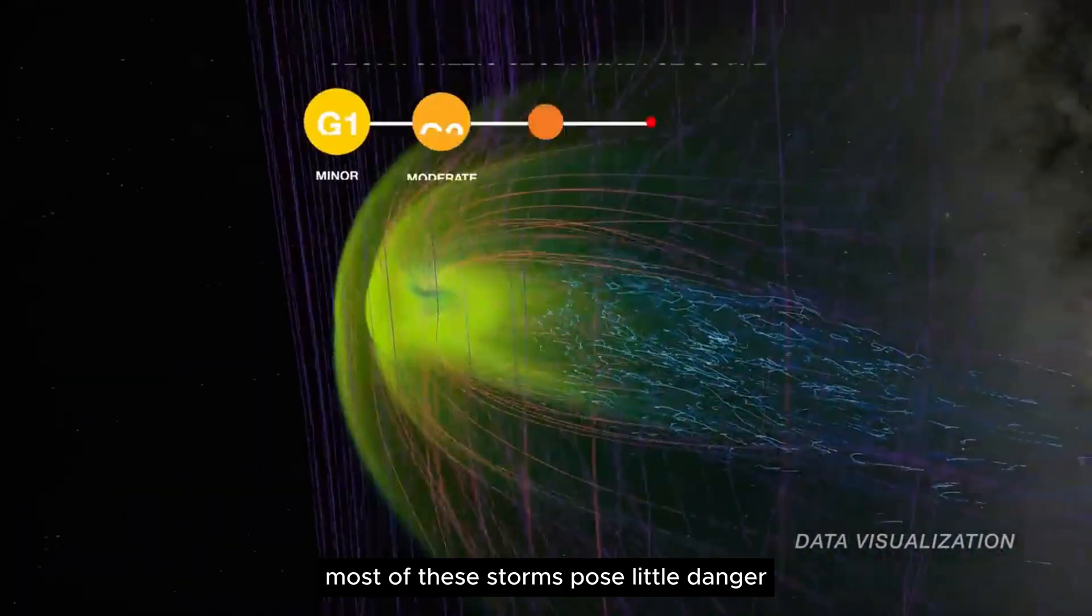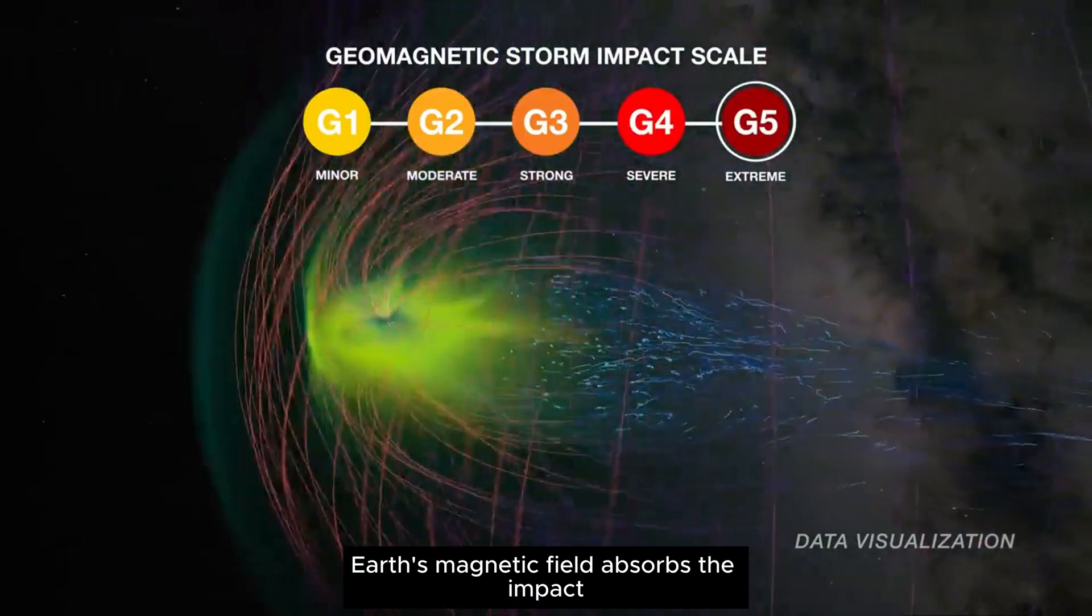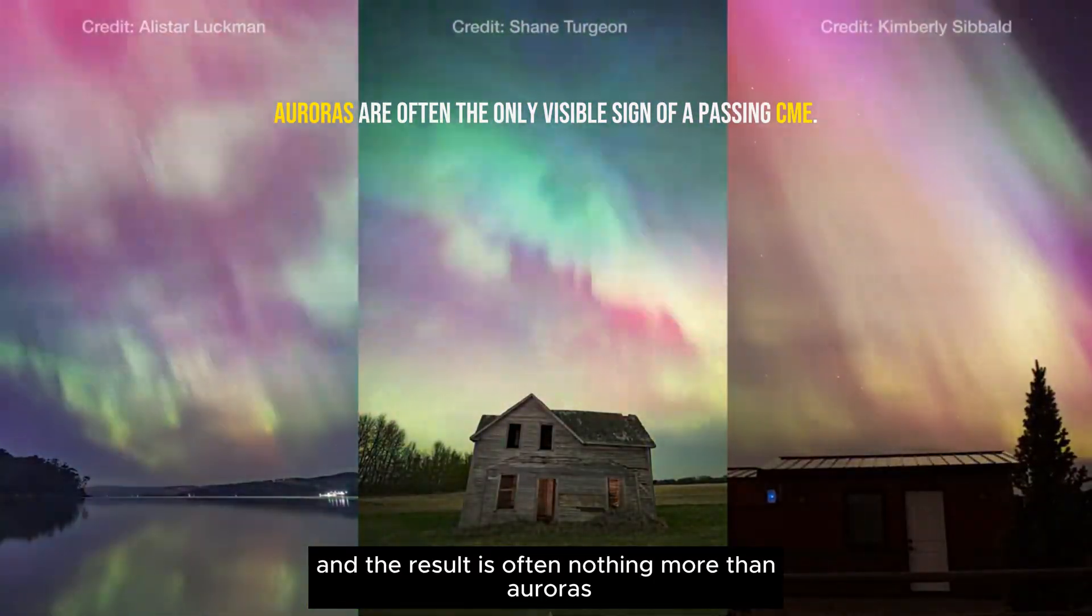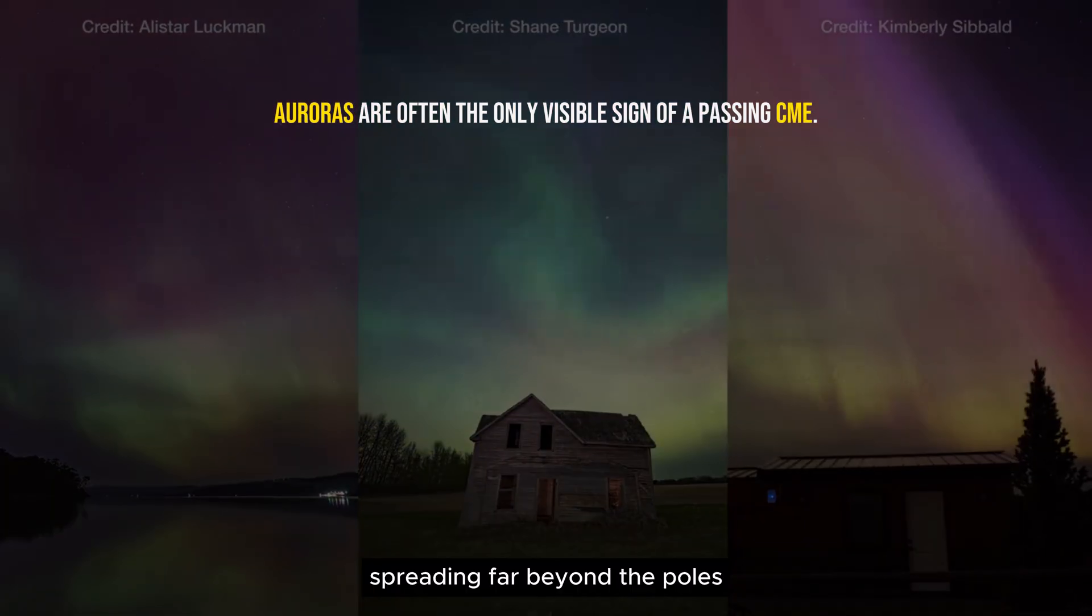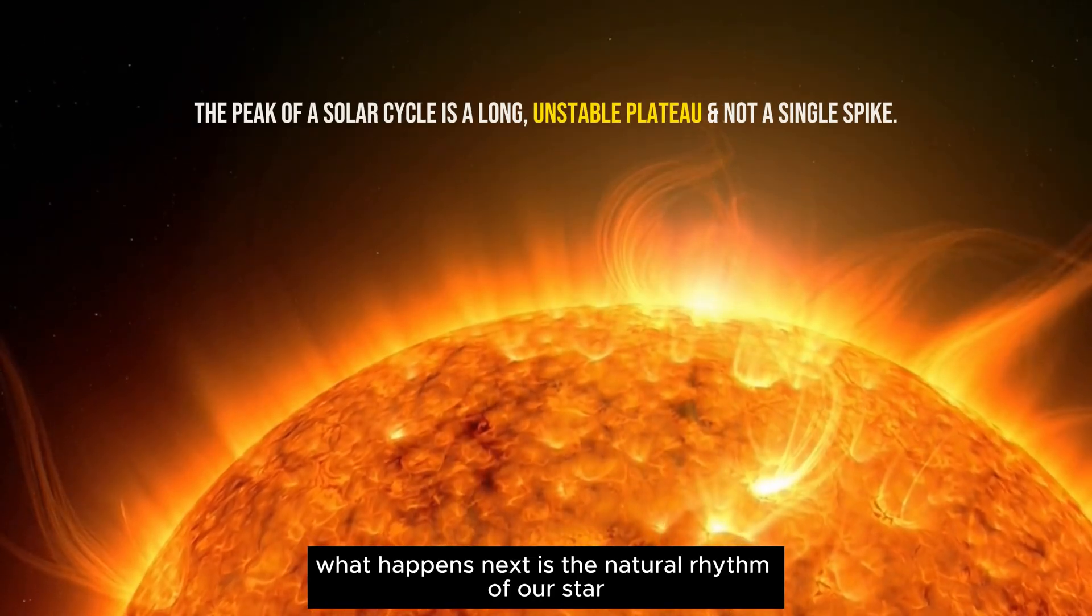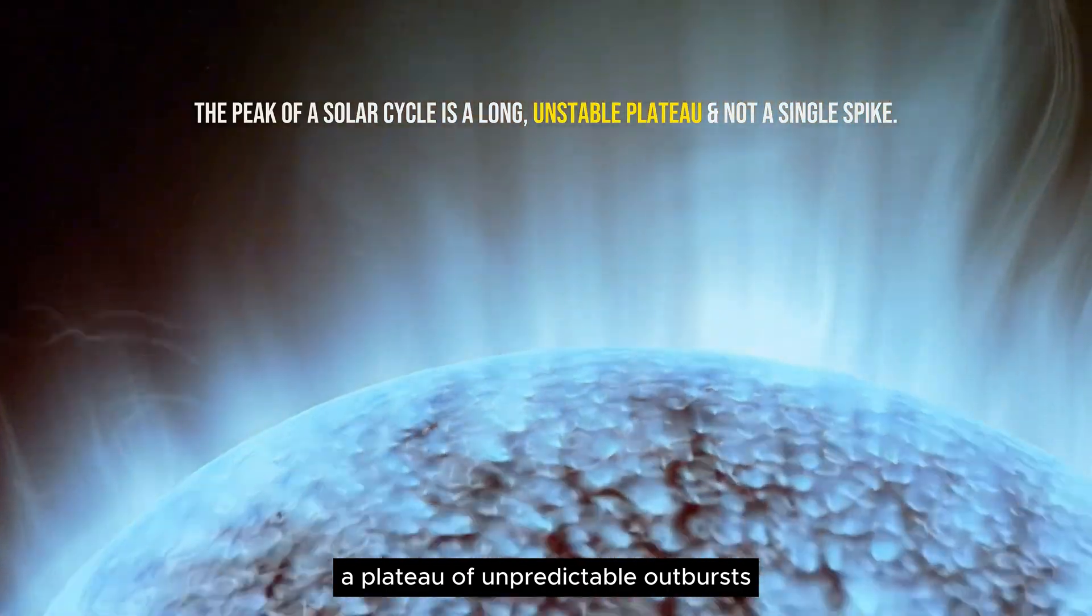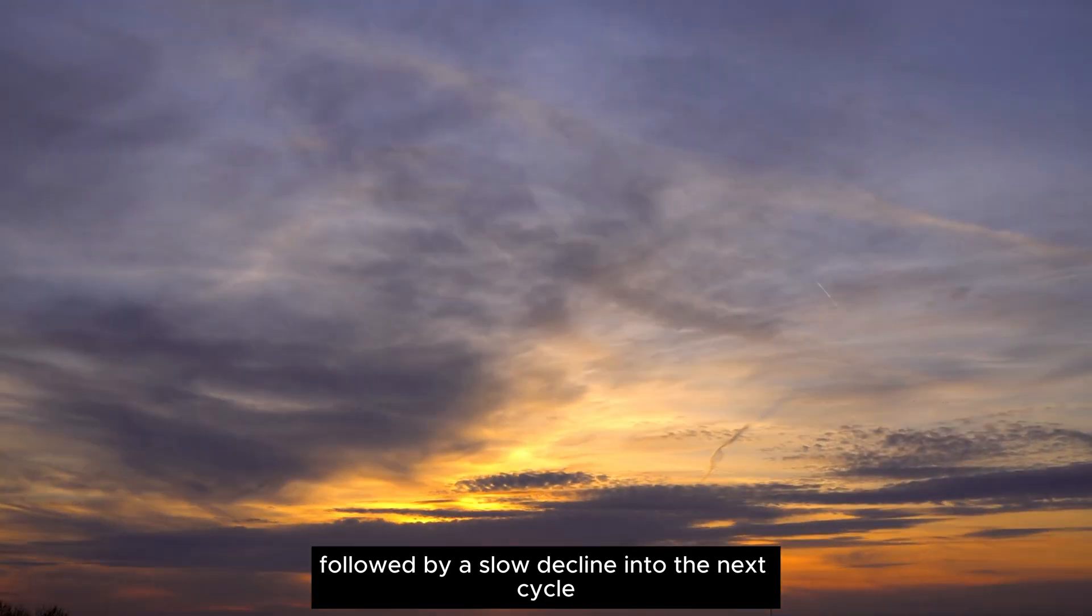Most of these storms pose little danger. Earth's magnetic field absorbs the impact, and the result is often nothing more than auroras spreading far beyond the poles. What happens next is the natural rhythm of our star, a plateau of unpredictable outbursts, followed by a slow decline into the next cycle.